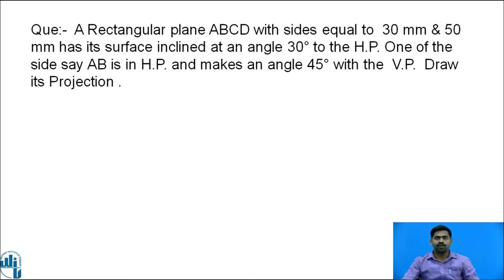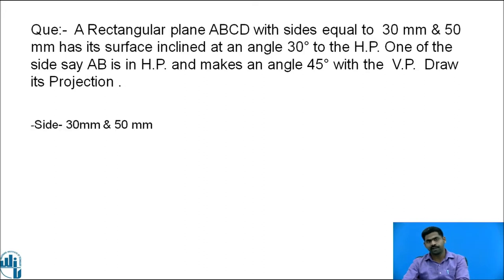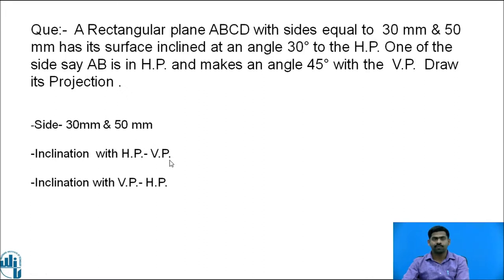Read the problem carefully and write down the given data. The rectangular plane has sides 30 mm and 50 mm. Remember: when inclination with the HP is given, it will appear in the VP, meaning you have to draw it in the VP. Similarly, when inclination with the VP is given, it is drawn in the HP.